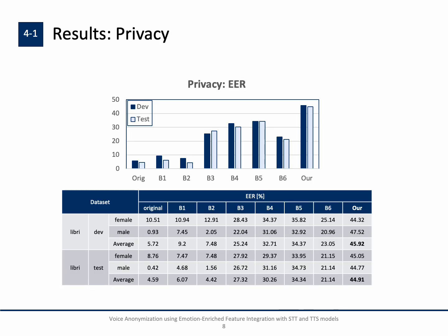The first metric is the privacy metric assessed by the ASV attacker, which is a strong attacker that assumes knowledge of our anonymization system. Because the attacker is strong, the baseline models don't have good performance — they have pretty low equal error rates, meaning it is easy for the attacker to distinguish whether an utterance came from a certain speaker or not. But our method produces anonymized data that makes it difficult for the attacker, achieving the highest equal error rate among the baselines at about 45%.